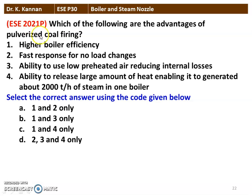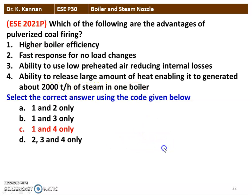Next question from the 2021 question paper: which of the following are advantages of pulverized coal firing? Higher boiler efficiency; fast response for load changes; ability to use low preheated air, reducing internal losses; ability to release a large amount of heat, enabling it to generate about 2000 tons per hour of steam in one boiler. Among the four statements, Statements 1 and 4 are correct. Pulverized coal firing gives higher boiler efficiency and can produce steam up to 2000 tons per hour in a single boiler.